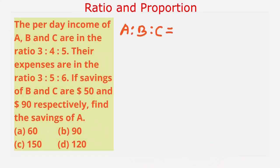The given incomes are in the ratio 3:4:5. Thus A:B:C is 3x:4x:5x.